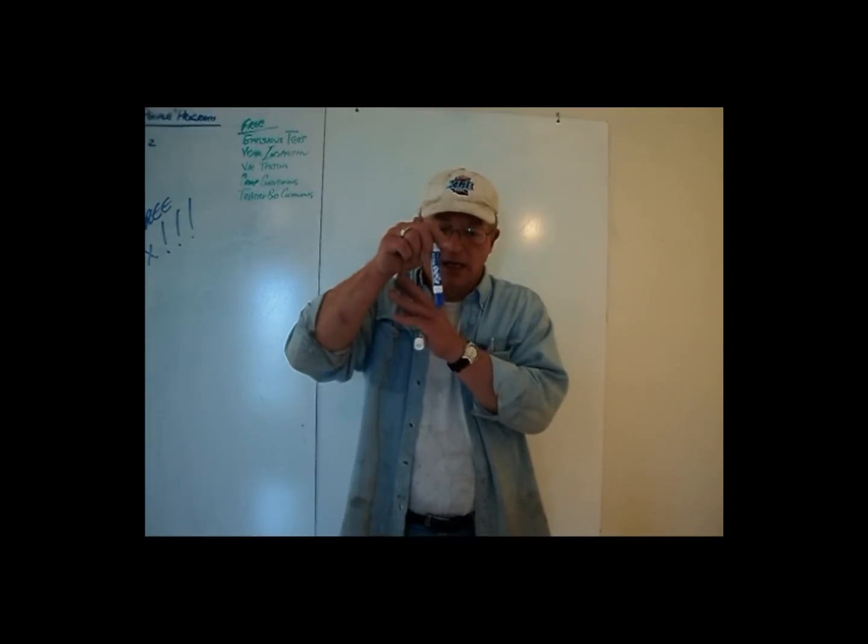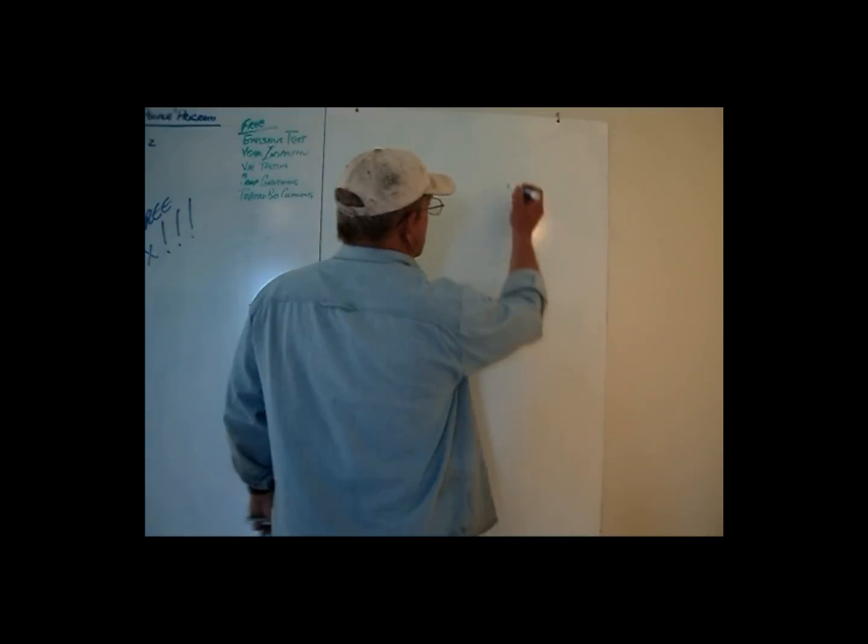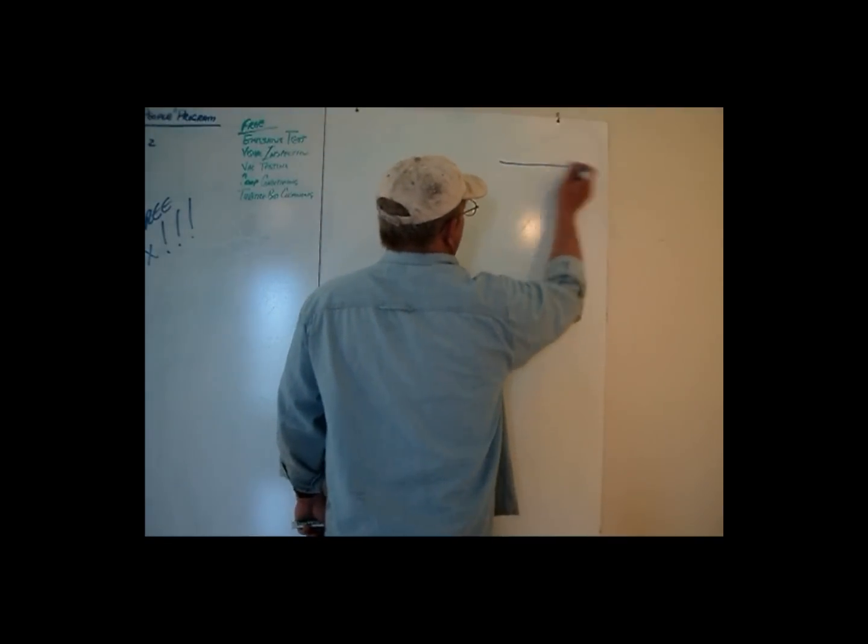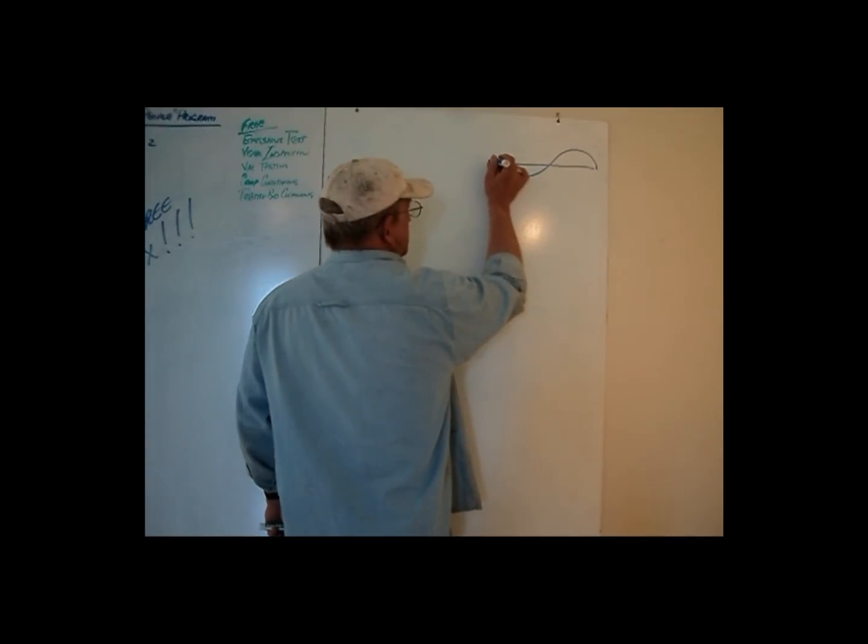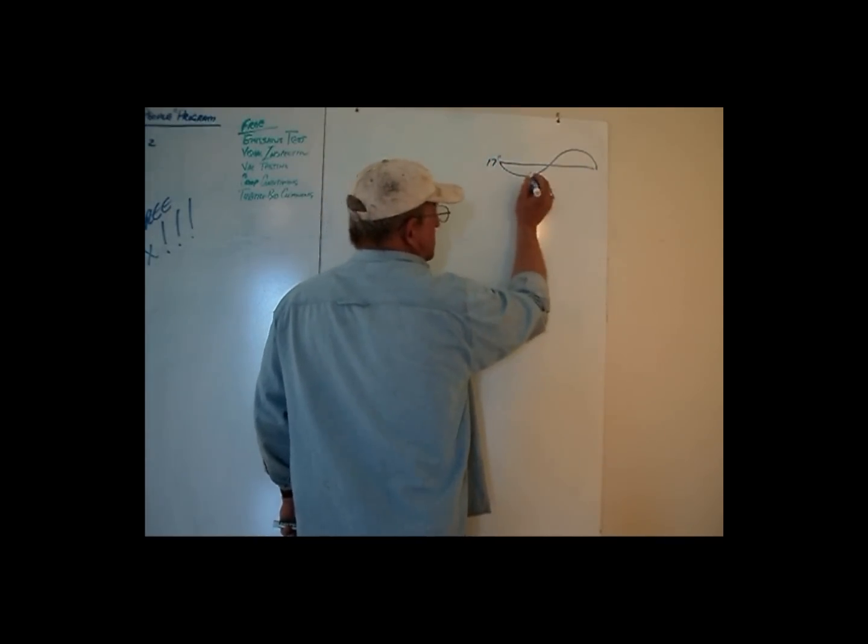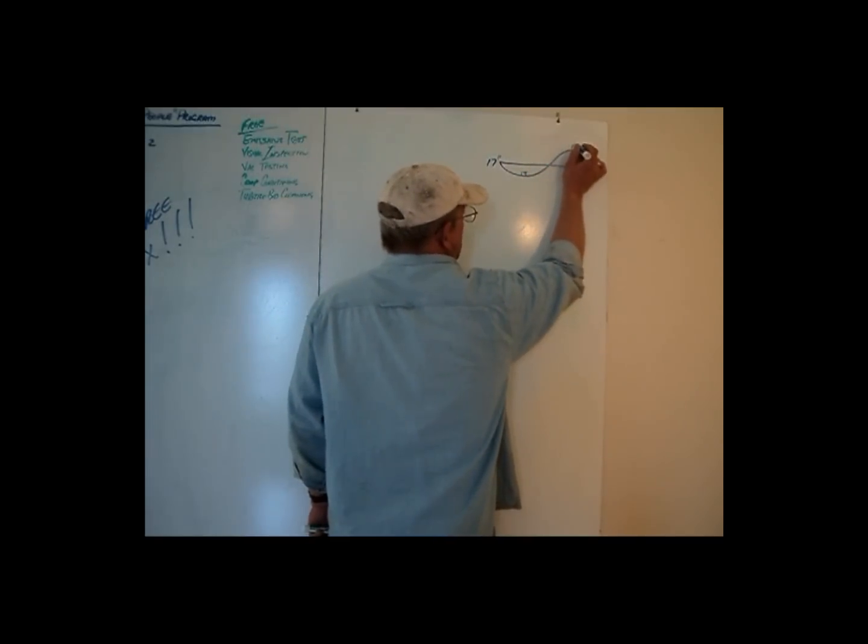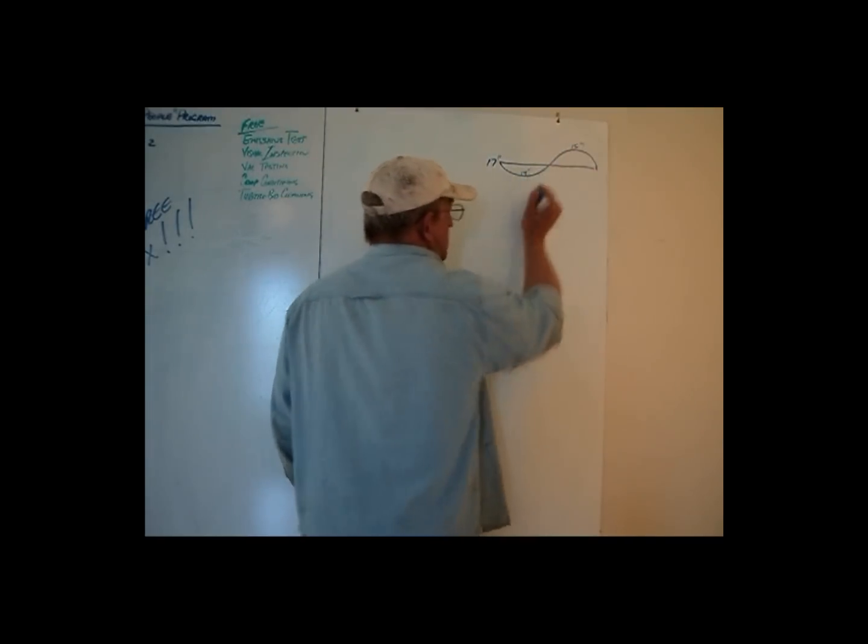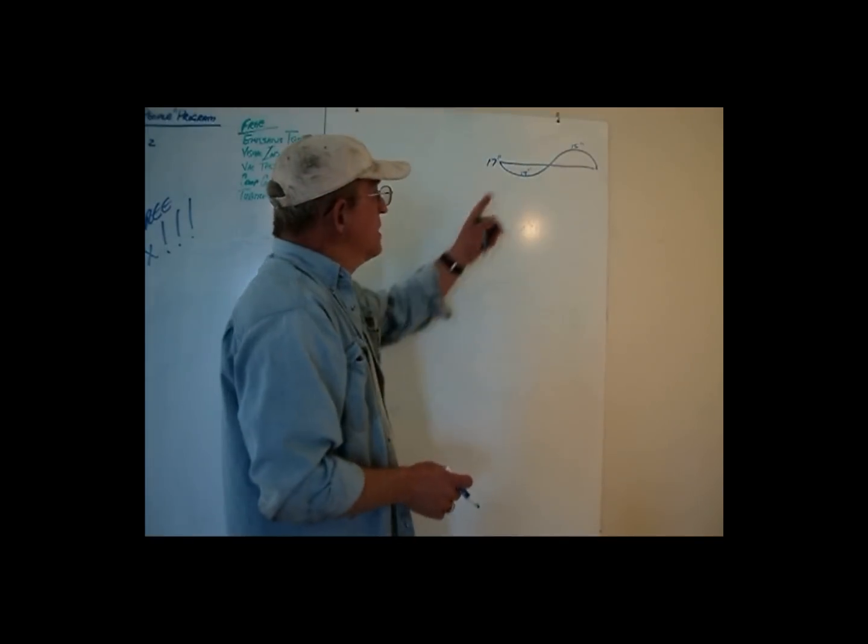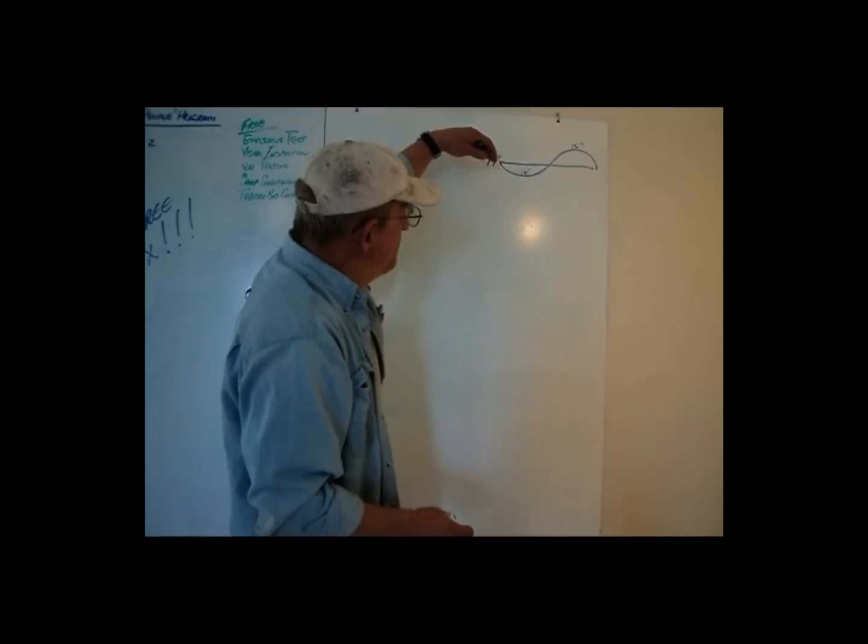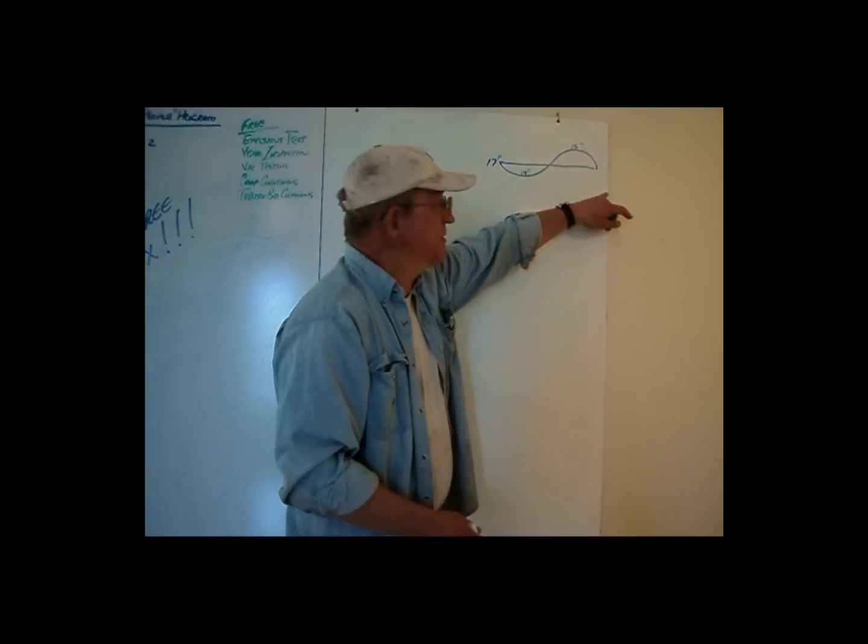Then it begins to slow until it reaches bottom dead center. This creates a pressure wave inside the engine. This is 17 inch medium vacuum, measured in inches of mercury, 19 inches to 15 inches is what you get. But this is as the piston begins to drop, it speeds up, and then it begins to slow down, causing a drop in the vacuum.